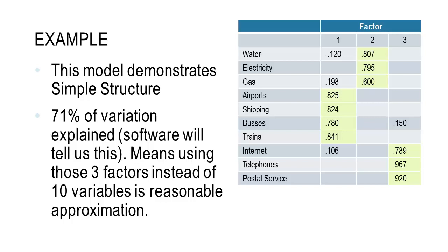If we have a look at each of these factors, the first one - see the highlighted ones here - airports, shipping, buses, trains, all of these seem to be about transportation. Factor two, we've got water, electricity and gas. So all of these seem to be some sort of infrastructure.